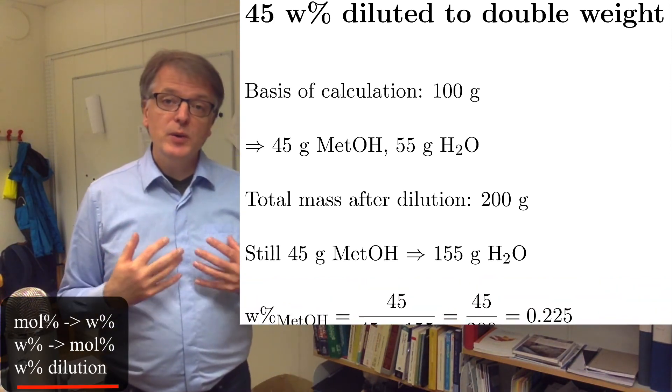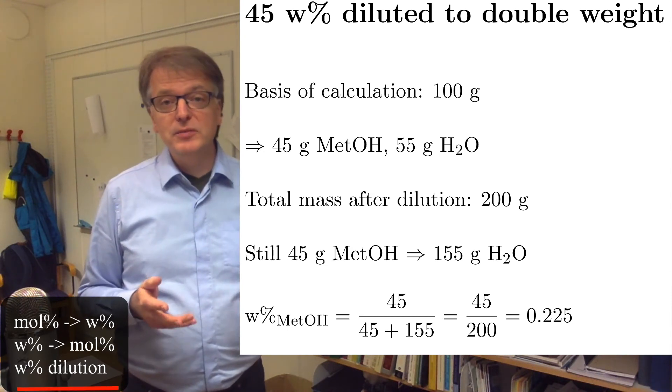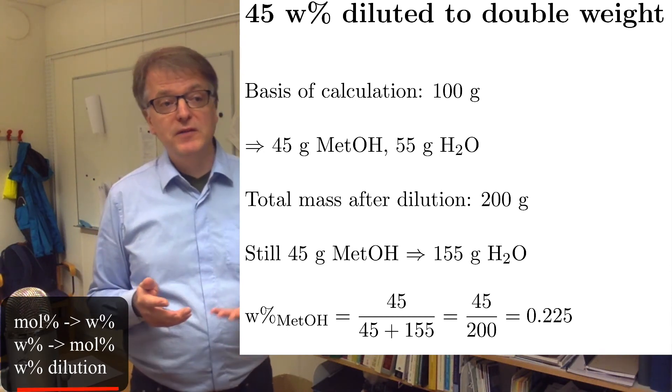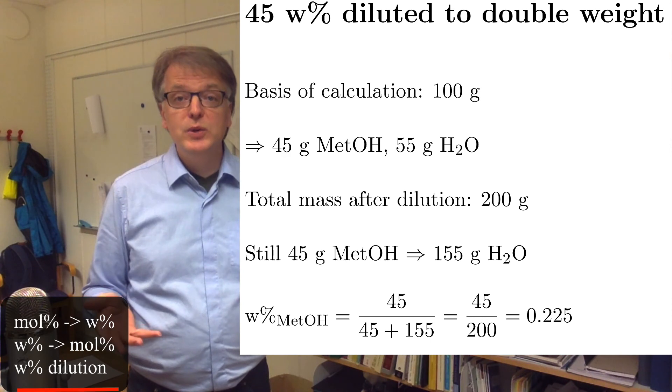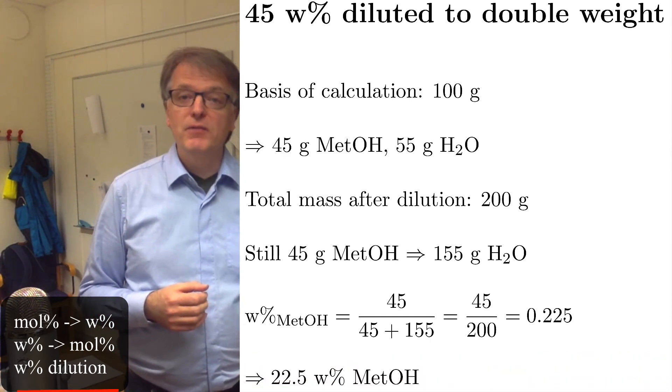And we calculate the new weight percent simply as 45 grams of methanol divided by the total mass, which is now 45 plus 155, or 200, and we get 22.5 weight percent of methanol.